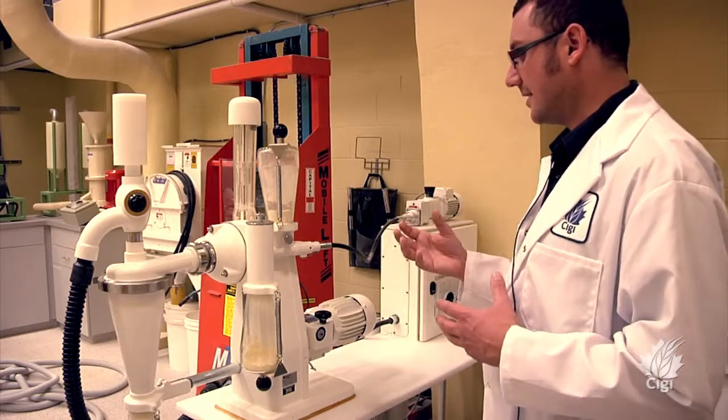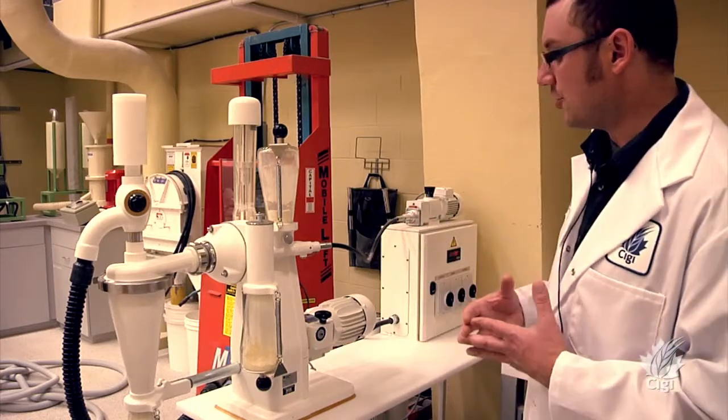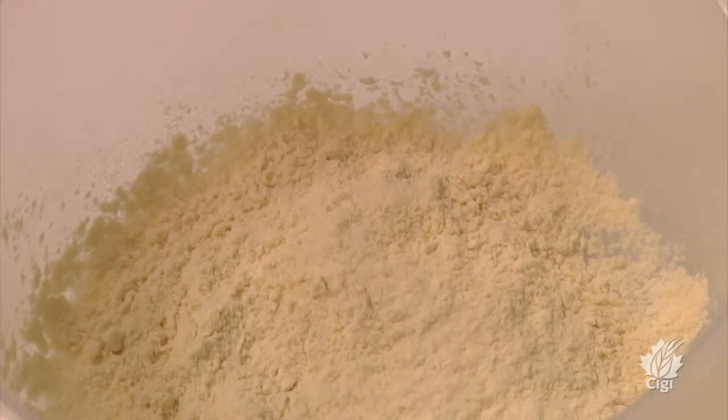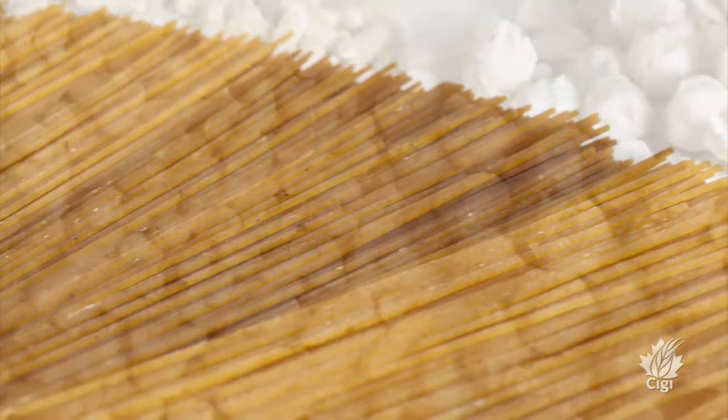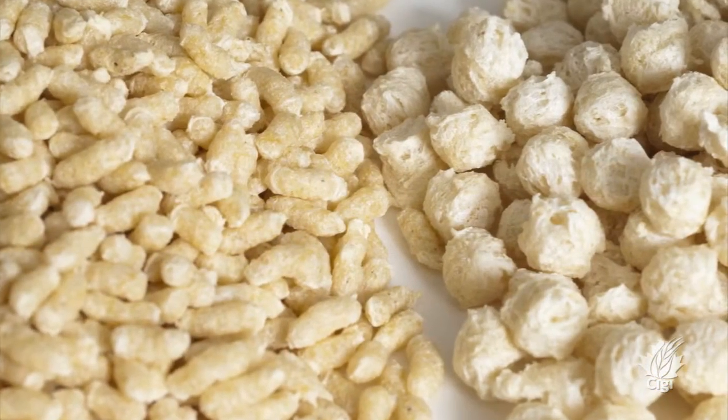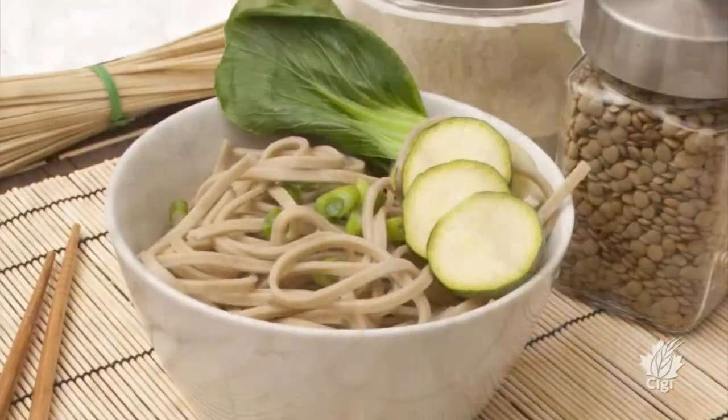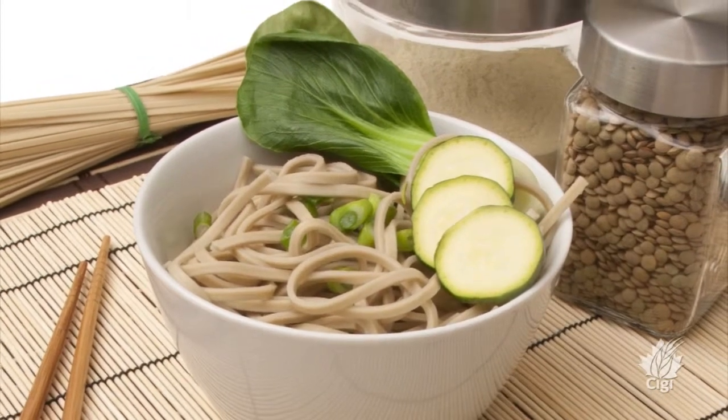Some of the things that we can do with fractions from flours—for instance, the starch fraction can be used in products like pasta, baked products, batters and coatings, extruded snacks, fillings, and salad dressings.